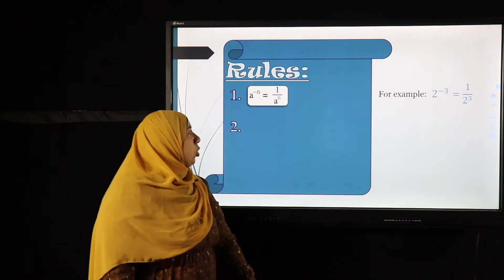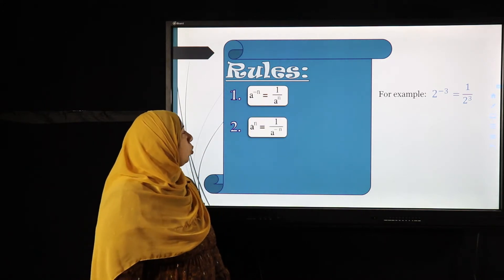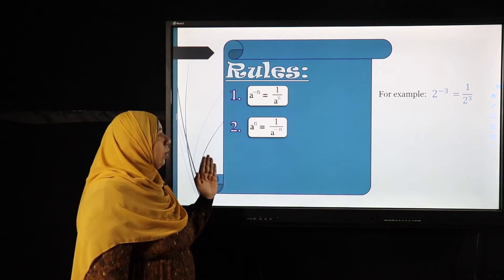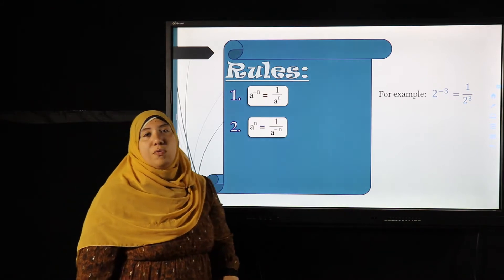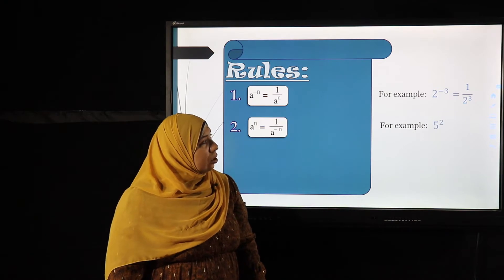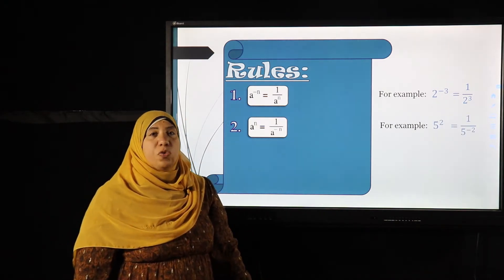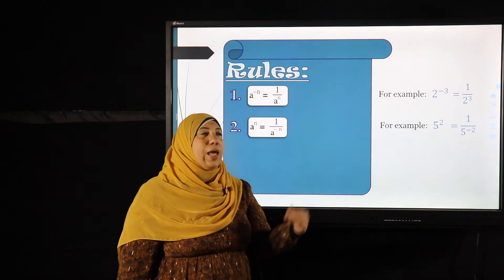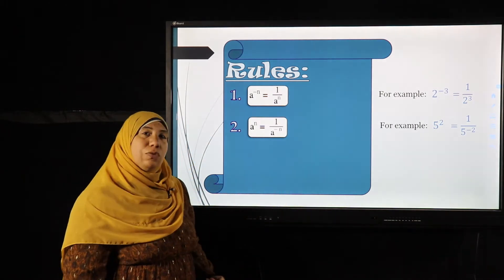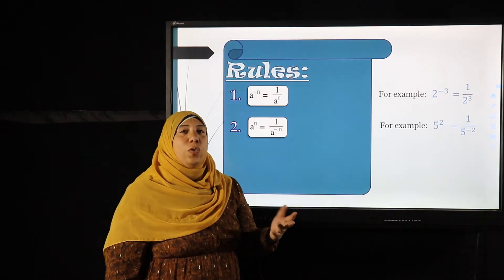The second rule is the opposite of the first: if a to the power n equals one over a to the power negative n. For example, three times five squared equals one over five to the power negative two. So if I have five to the power negative two on the bottom, I can write it as five squared and find the reciprocal of the number.